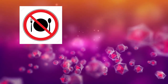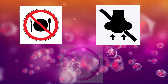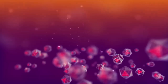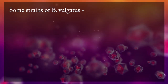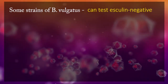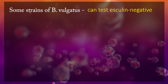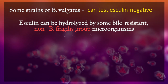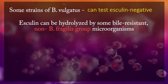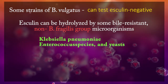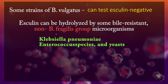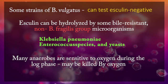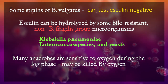Do not ingest, inhale, or allow contact with skin. Some strains of Bacteroides vulgatus, a member of the Bacteroides fragilis group, can test esculin-negative. Esculin can be utilized by some bile-resistant non-Bacteroides fragilis group microorganisms, such as Klebsiella pneumoniae, Enterococcus species, and yeast.